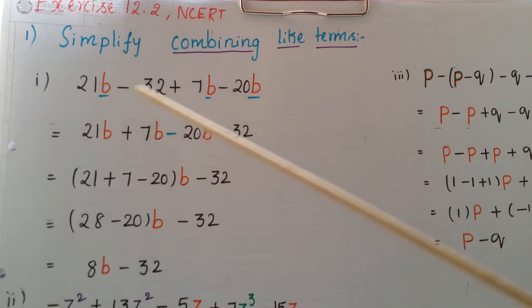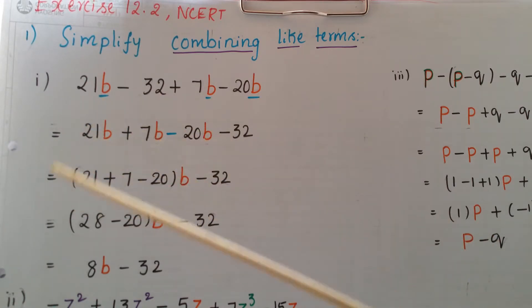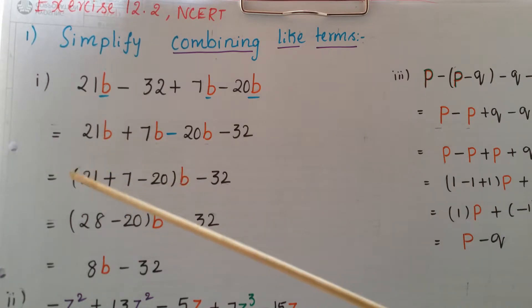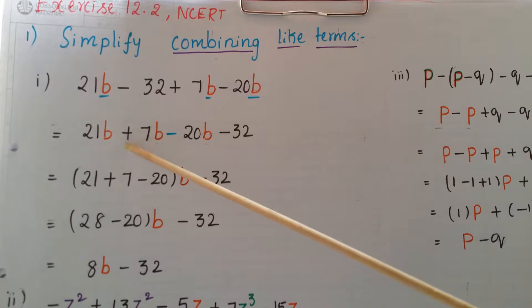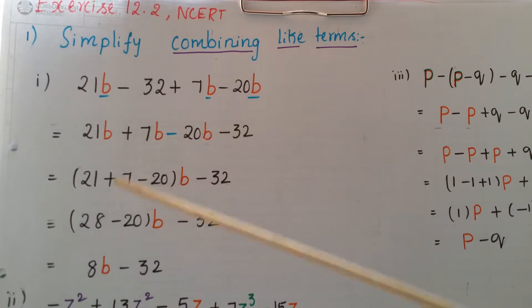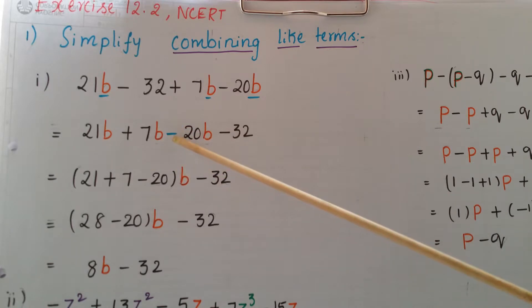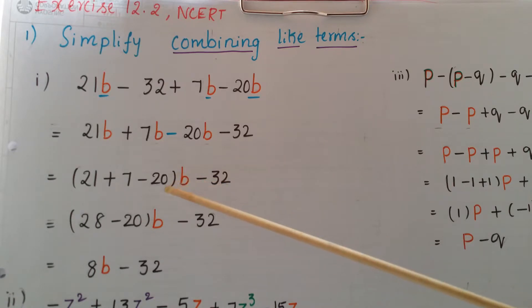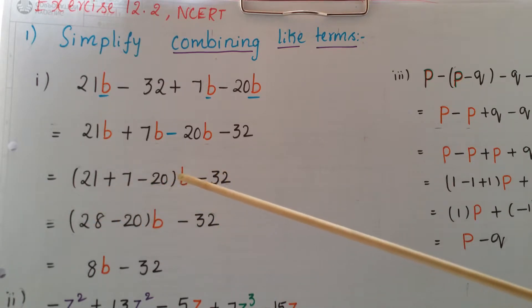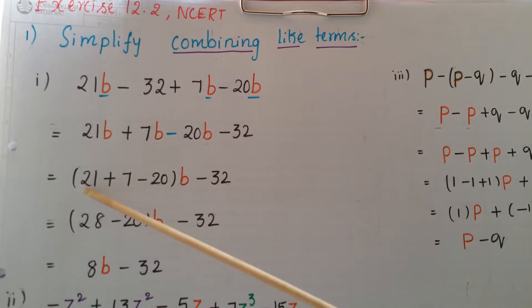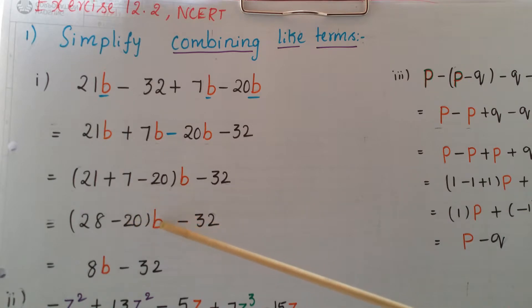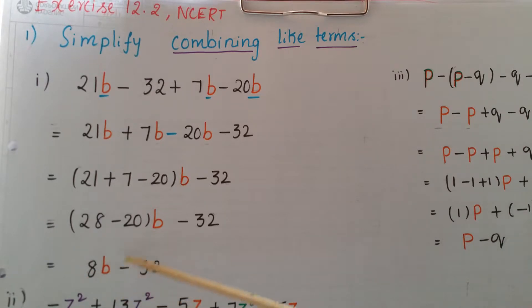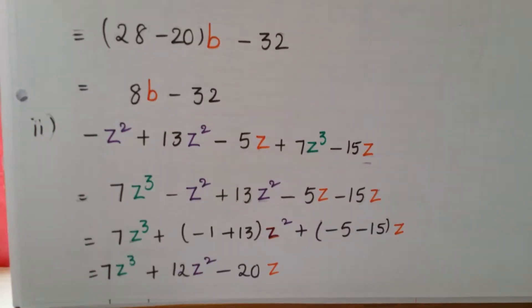Take b as common and write the numerical values in brackets. So write: b times (21 plus 7 minus 20) minus 32. Now add: 21 plus 7 is 28, minus 20 gives 8. So the answer is 8b minus 32.